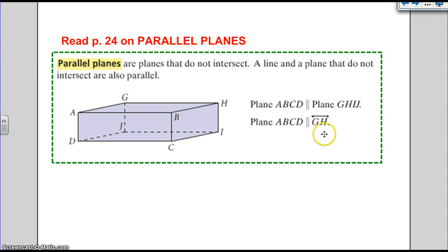Parallel lines. Parallel planes are planes that do not intersect. A line and a plane that do not intersect are also parallel. So if you notice plane ABCD that's this side of the box right ABCD is parallel to plane GHIJ. So this front of the box is parallel to the back of the box.